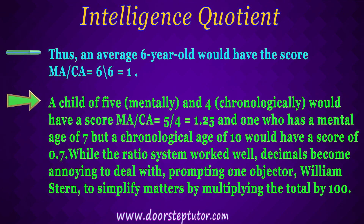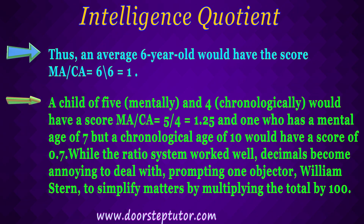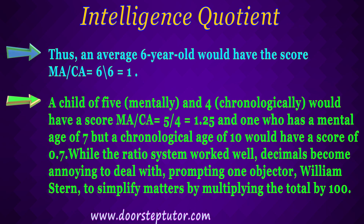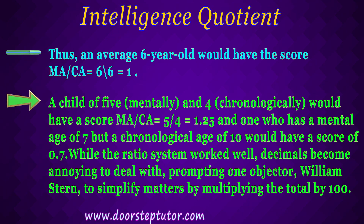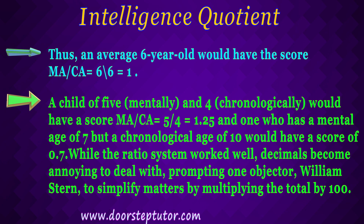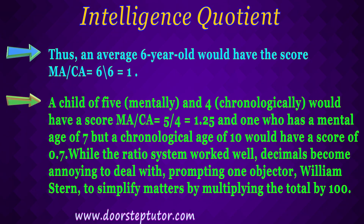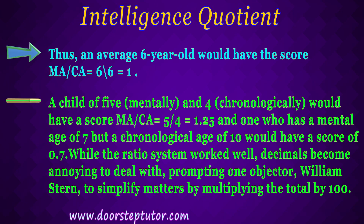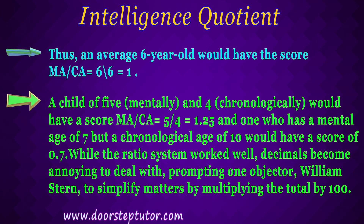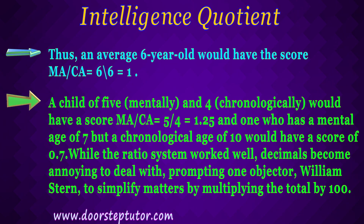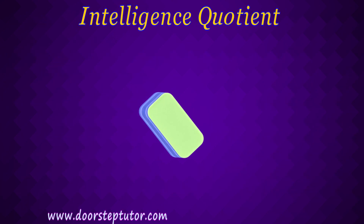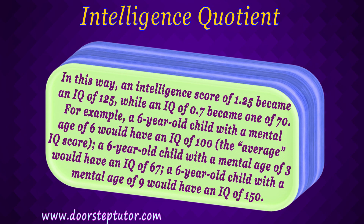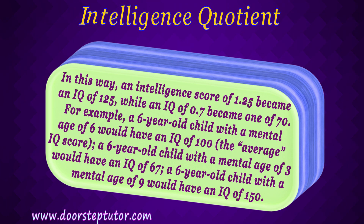While the ratio system worked well, decimals became annoying to deal with, prompting William Stern to simplify the matter by multiplying the total by 100. The resulting score was called intelligence quotient or IQ, thus IQ = (MA / CA) × 100. In this way, an intelligence score of 1.25 becomes an IQ of 125, while a score of 0.7 becomes an IQ of 70.